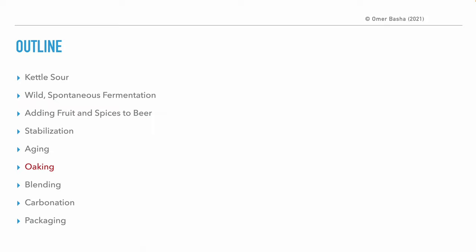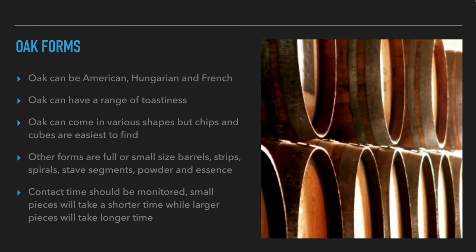Oak for aging can come from America, Hungary, and France, and it is traditional to char the wood in a wide range of degrees. Oak can come in many forms: barrels of different sizes, oak staves, parts of barrels, chips, cubes, powders, and oak extract. Chips and cubes are easiest to find. The contact time with oak should be monitored — smaller shapes of wood take less time to extract flavor because there is more surface area in contact with the beer.